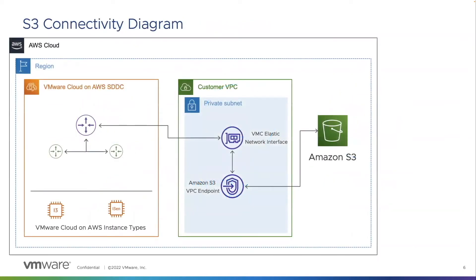Let's take a look at the connectivity diagram. S3 is considered a regional service, meaning that it's not tied to a VPC or a virtual private cloud like other AWS resources. Typically, S3 is accessed via the internet, but since VMware Cloud on AWS is on the AWS network, we have a way of accessing S3 via the AWS backbone instead of the internet. This is done either via an AWS private link or a VPC endpoint. S3 traffic from the SDDC is sent over an ENI or an elastic network interface to the connected VPC, where we have a VPC endpoint configured for the S3 service. Traffic can then flow through this endpoint directly to the S3 bucket. This not only speeds up access to the resource but also saves on egress charges.